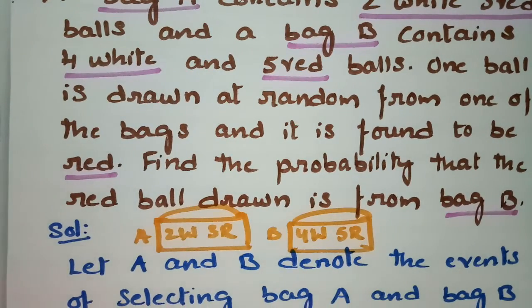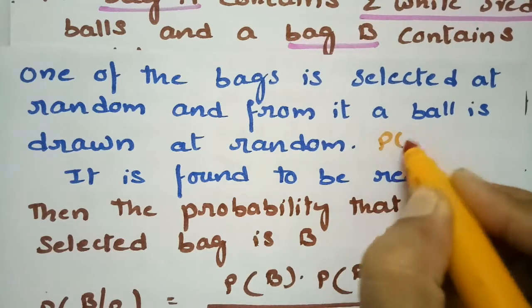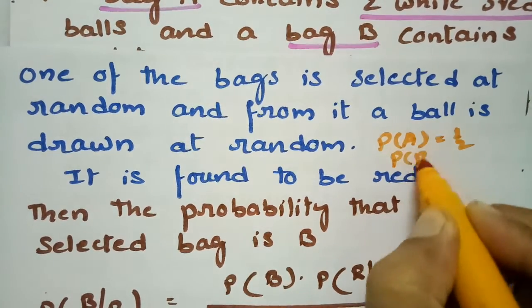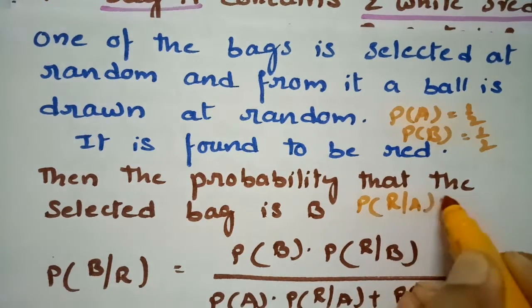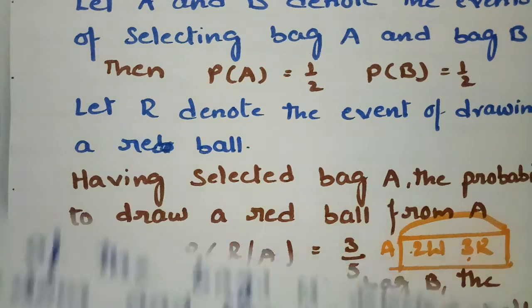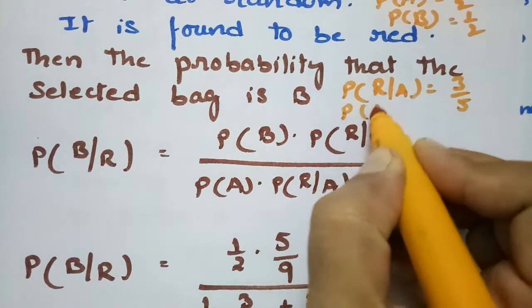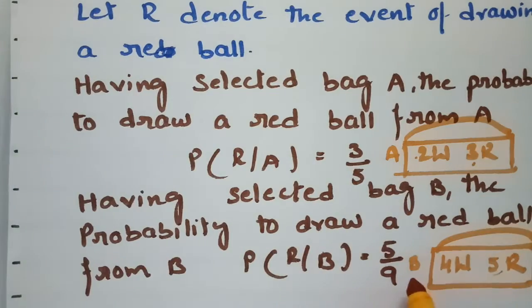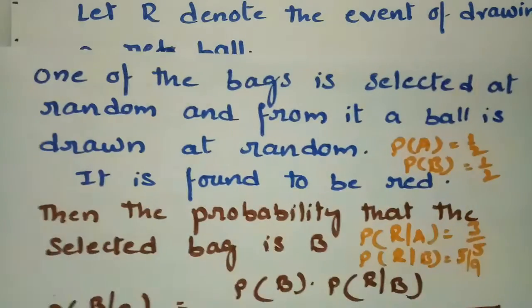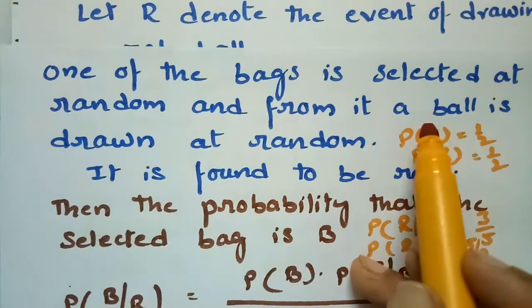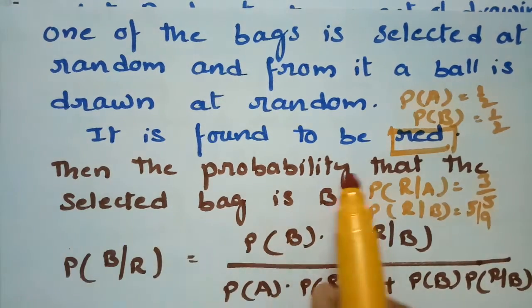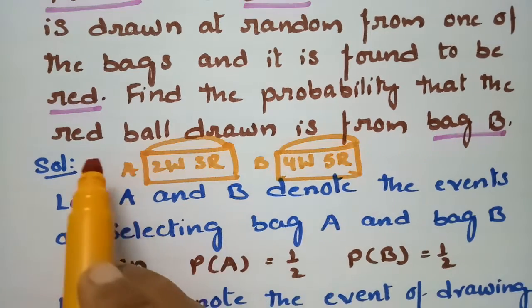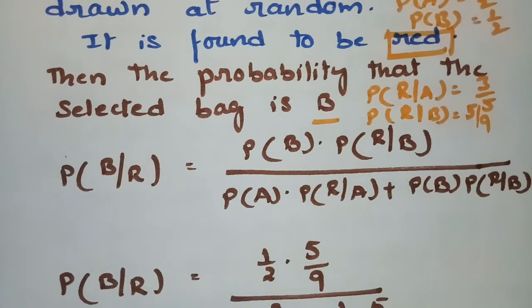We now have all values ready: P(A) = 1/2, P(B) = 1/2, P(R|A) = 3/5, and P(R|B) = 5/9. One of the bags is selected at random and a ball is drawn — it is found to be red. We need to find the probability that the selected bag is B, i.e., the probability that the red ball drawn is from Bag B. This is a conditional probability problem.